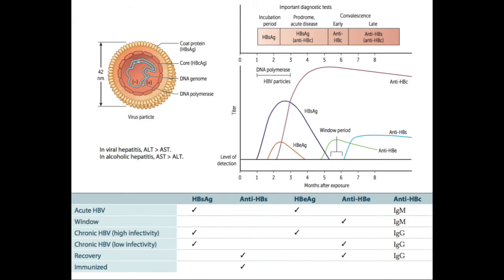If someone is a chronic carrier, they will always have some presence of the HBs antigen and it will always be detectable. The anti-HBs antibody is seen only during complete recovery or with immunization — not during acute disease, the window phase, or in a chronic carrier state, because those individuals don't have immunity to hepatitis B. The HBc antibody appears early in acute disease and is also seen during the window phase — it's the only marker seen during the window phase — as well as during complete recovery and in a chronic carrier state. It is not seen in the immunized population.